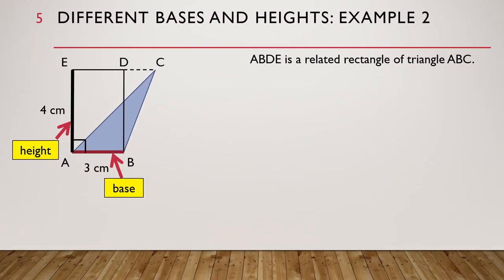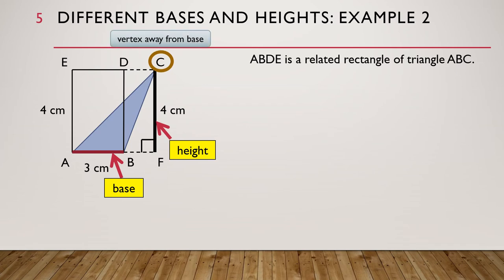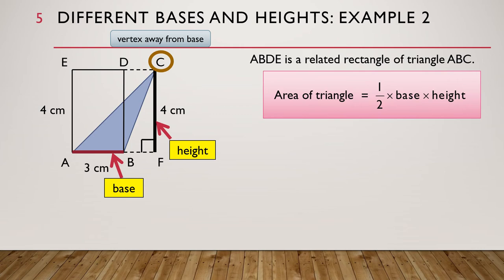Let's look at another example. We have a slanted triangle ABC, with base AB and height EA. ABDE is a related rectangle of triangle ABC. We can move the height so that it starts from C, which is the vertex away from the base AB, and goes all the way down to the base. So, CF is also the height of triangle ABC. The area of the triangle is still equal to half times base times height, so the area of triangle ABC is 6 square centimeters.